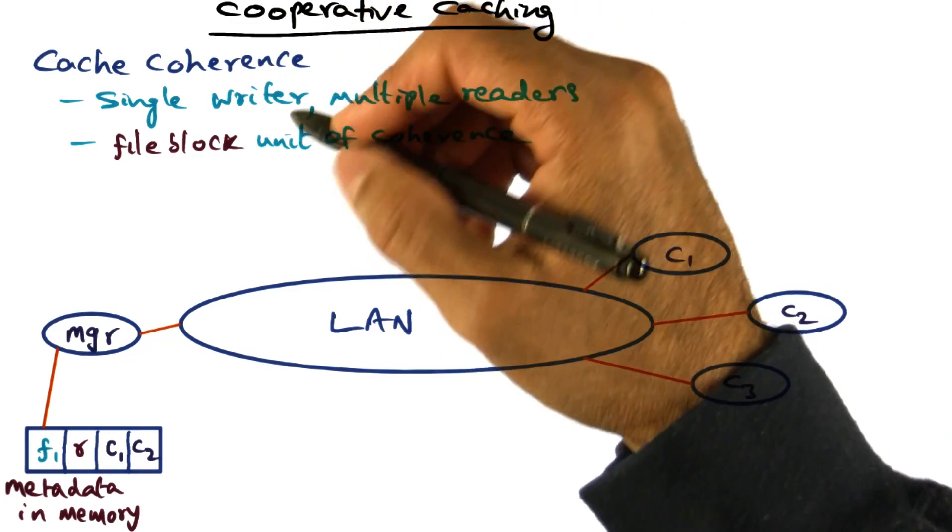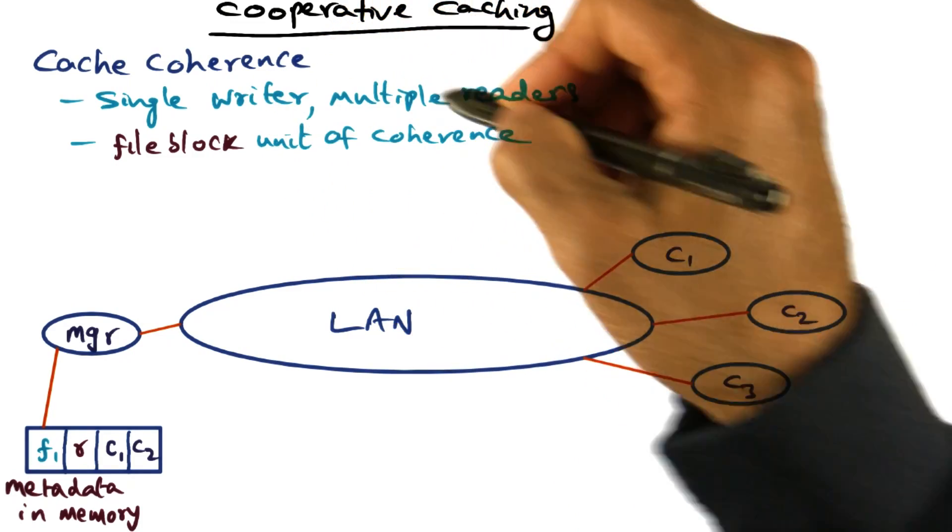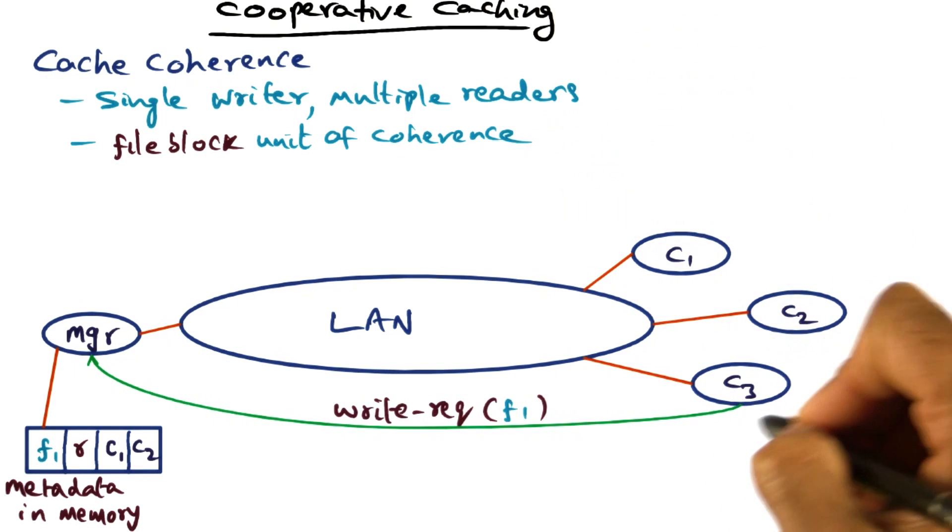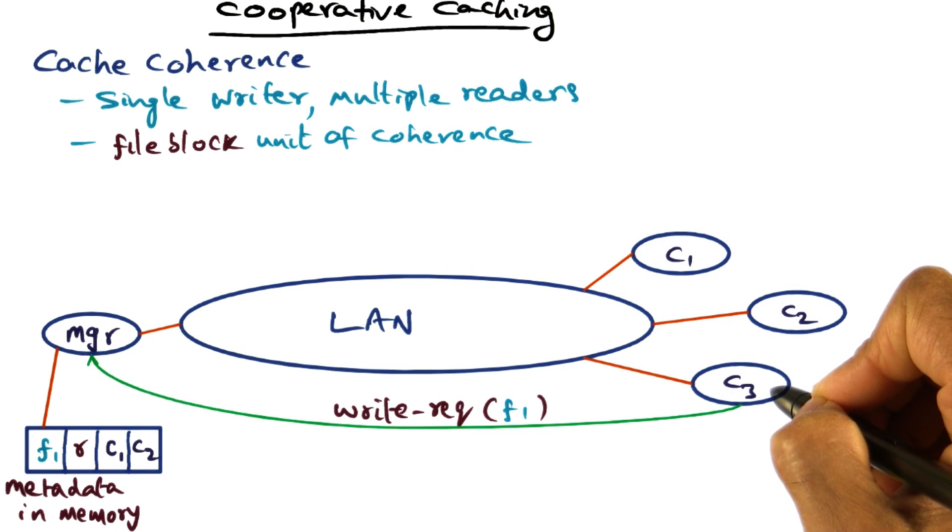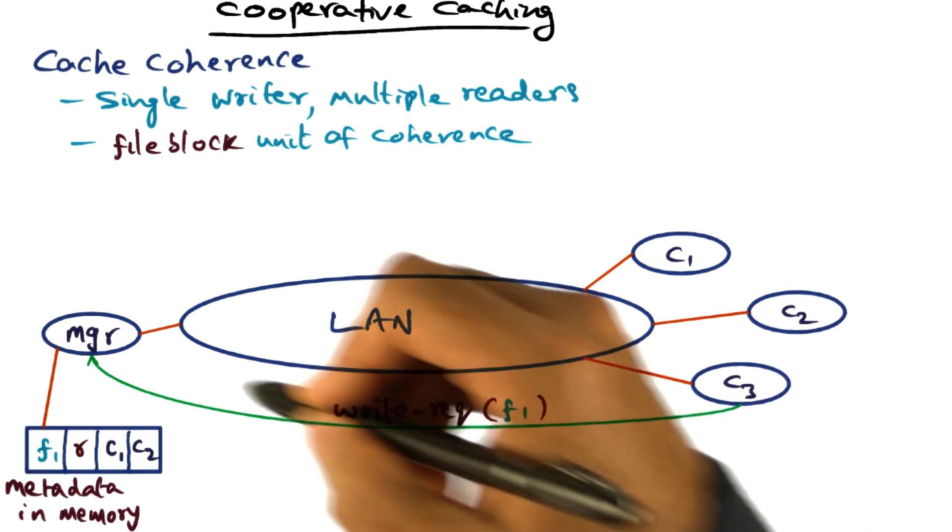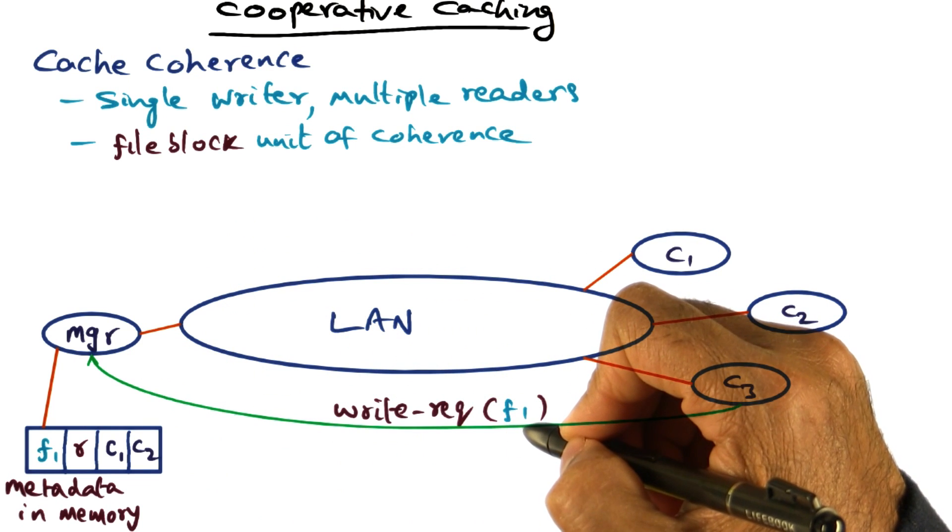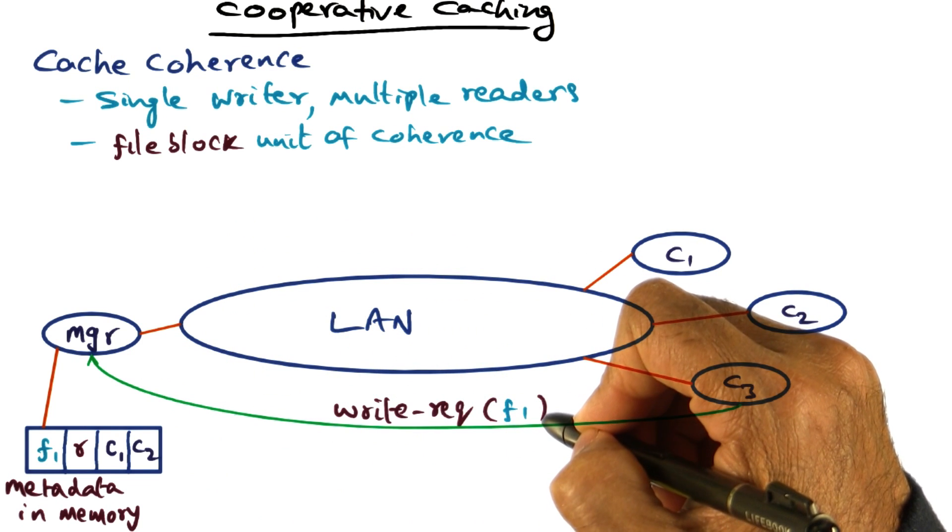So the semantics that is observed for cache coherence: single writer, multiple readers. So if client C3 makes a request to the manager for writing to this file F1...